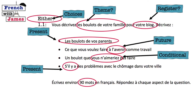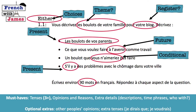It is a 90-word task but you can be slightly under or over — it won't make much difference. If you're a lot under you probably haven't given enough detail, and going over won't gain extra content marks but could count against you for language if you make mistakes. The must-haves are at least three tenses, with explicit time-frame references like 'hier', 'l'année dernière', 'à l'avenir' so the examiner can see you're referencing different time frames even if the grammar isn't perfect. Give at least two opinions with reasons, plus extra details like descriptions, time phrases, or who you've done things with. Optional extras include other people's opinions — 'ma mère pense que' — and extra tenses like the conditional or imperfect.